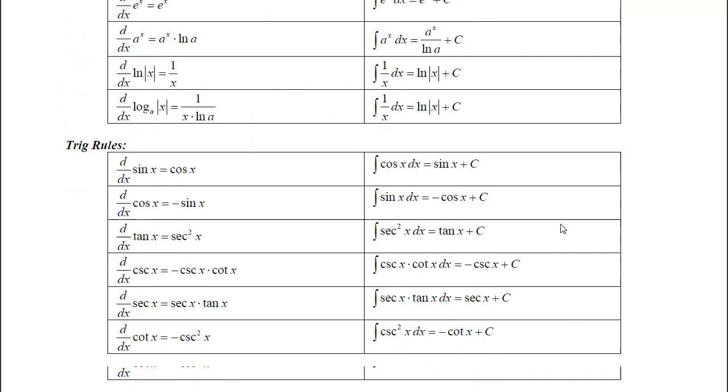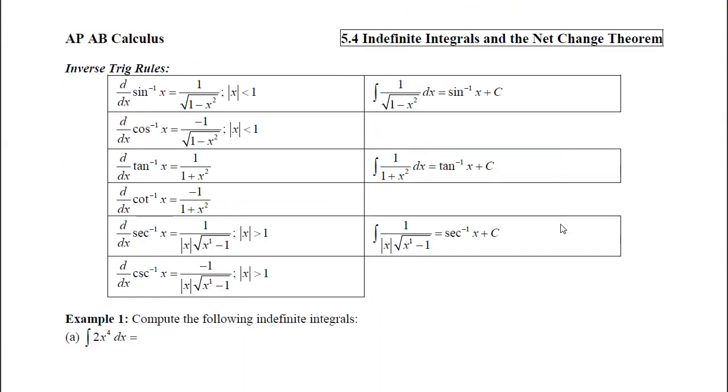We've got our trig rules. Then we have our inverse trig rules. Now notice, to help you get at that language objective, notice the relationship between the derivative of sine inverse and the derivative of cosine inverse. You should be able to see here why we don't need to have a rule going backwards on this derivative of cosine inverse.